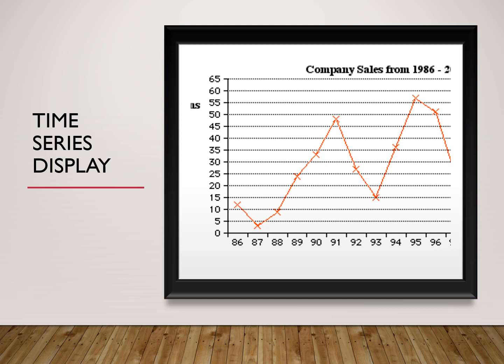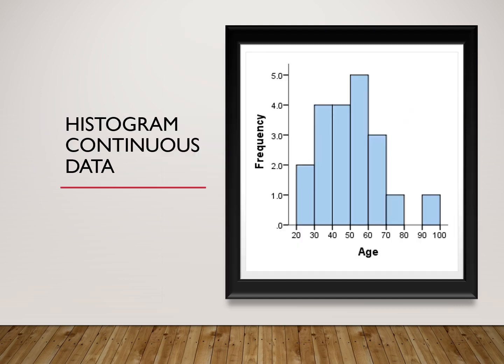The last one is the histogram, which is used for continuous data. Age is a continuous variable — look at here: from 19–20, then 20–30, 30–40, 40–50, we have more information about 50–60. That is our histogram. It is also important to check the normality of data — how the data is distributed normally. We use the histogram to find out how the data is normal.